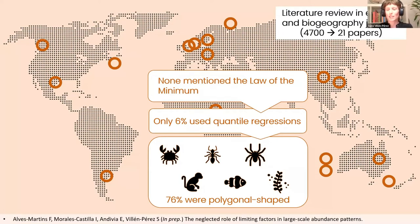Surprisingly, only 6% of these studies use quantile regressions to assess the relationship between abundance and the environmental gradient. That means they were not identifying these polygonal-shaped patterns as such, and none of them mentioned the law of the minimum. Even though we are aware that there are researchers using quantile regressions and acknowledging these types of patterns, we think that the community in general is not aware of the existence of these patterns and the theory behind them and their importance.